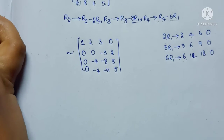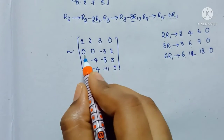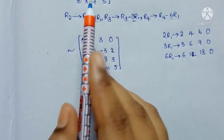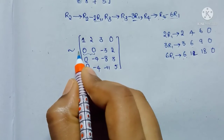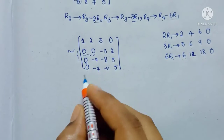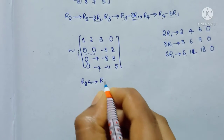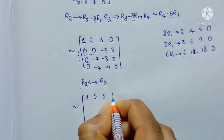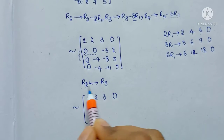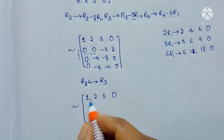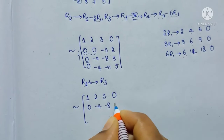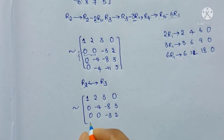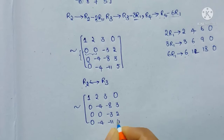Looking at this matrix, R2 has two zeros and R3 has only one zero. According to the definition of Echelon form, we have to swap these two rows. R2 is interchanged with R3. Row 1 stays: 1, 2, 3, 0. New R2 (old R3): 0, −4, −8, 3. New R3 (old R2): 0, 0, −3, 2. R4 unchanged: 0, −4, −11, 5.